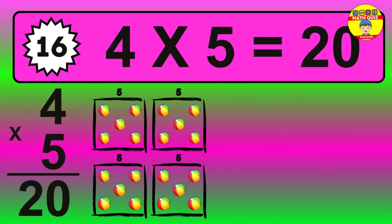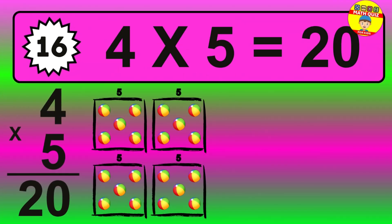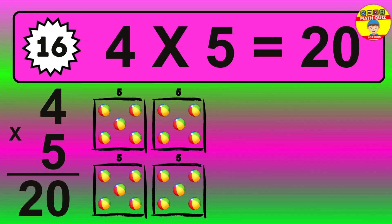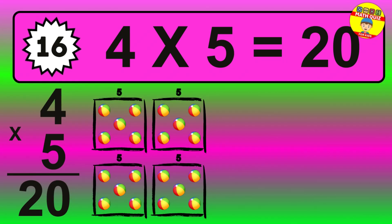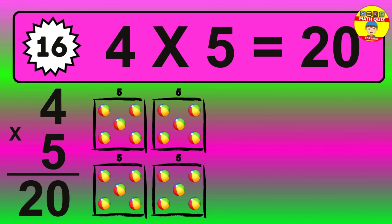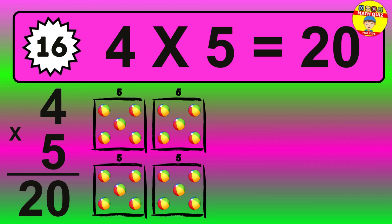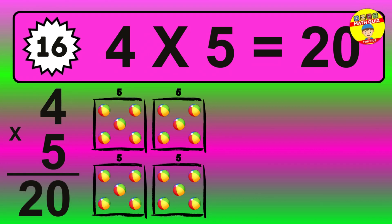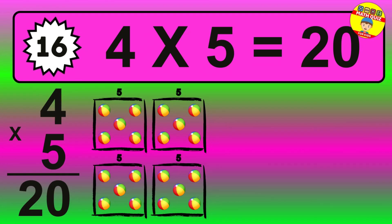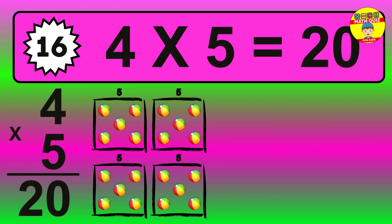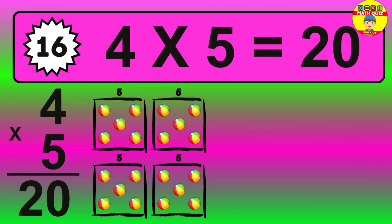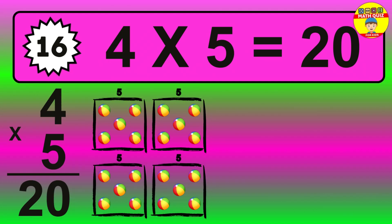Question 16. 4 times 5 equals what? The answer is 4 times 5 is 20. To calculate, we have 4 groups with 5 balls each one. So, how many balls do we have? 20 balls.